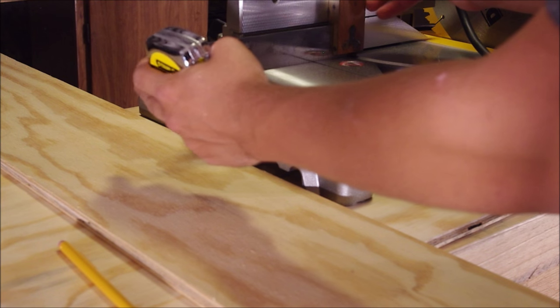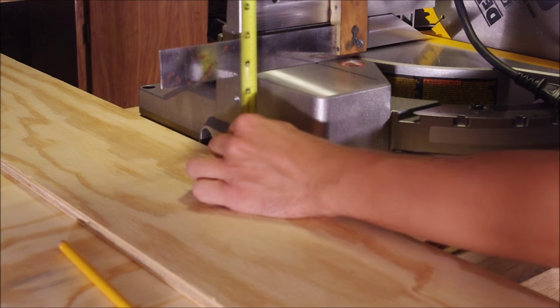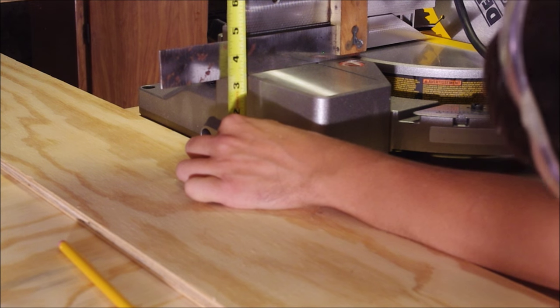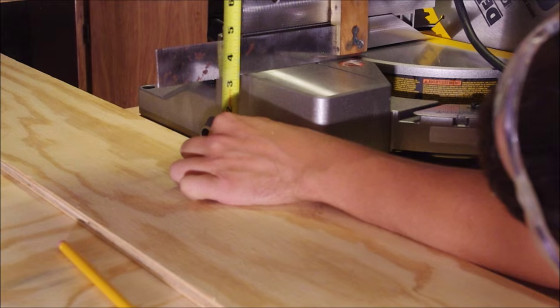Now that the plywood's cut, you need to make your spacers and figure out how tall they need to be. To do that, put a sheet of plywood next to your saw and measure the distance from there to the top of the bed. That'll tell you exactly how tall the spacers need to be.